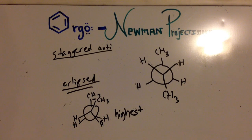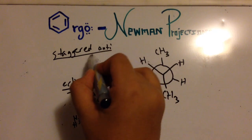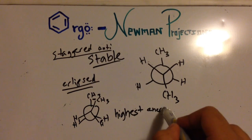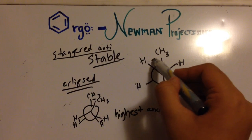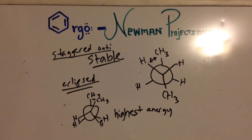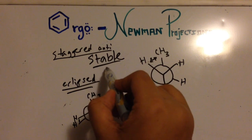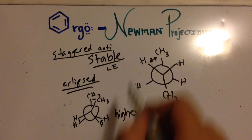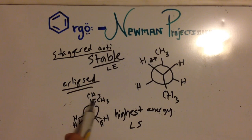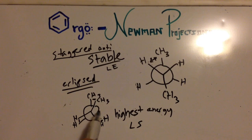So to summarize: the staggered anti conformation is the most stable and has the lowest energy because there is barely any steric hindrance — the CH3 and H groups are far apart from each other. The eclipsed conformation is the least stable and has the highest energy because all the groups — CH3, CH3, H, H — are trying to occupy the same space, creating a lot of steric hindrance.